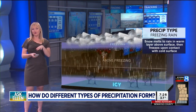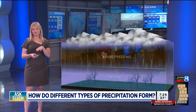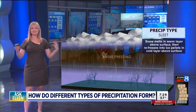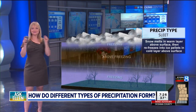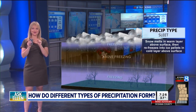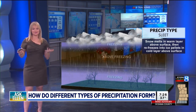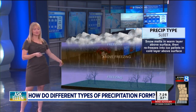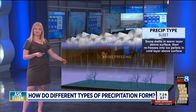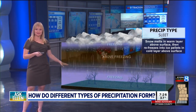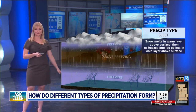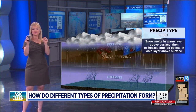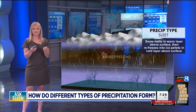If that layer of cold air at the surface is a little thicker, then we see sleet. Sleet looks like little ice shards. Basically what's happening is the snow melts and then refreezes, because there's so much cold air between the middle of the atmosphere and the ground that it gives the raindrops time to turn into ice shards.